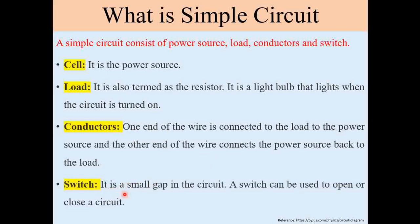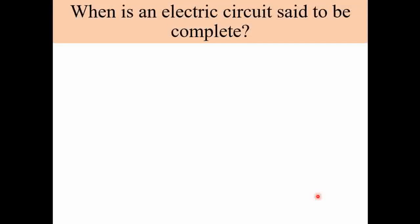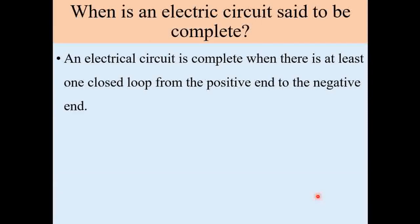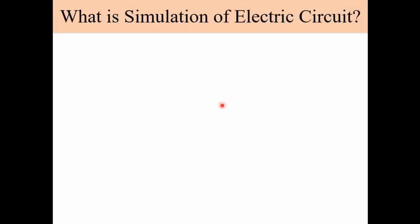A switch is a small gap in the circuit. A switch can be used to open or close the circuit, making the circuit operational or in a stationary condition. An electric circuit is said to be complete when there is at least one closed loop from the positive end to the negative end of the source — when all connections from the cell or battery's positive end to its negative end are complete.